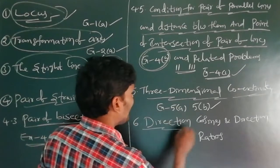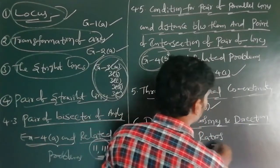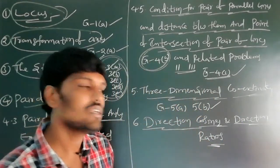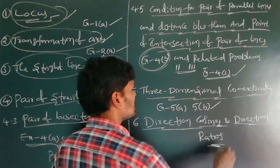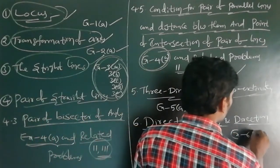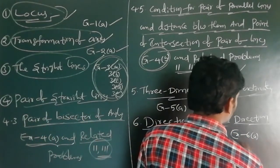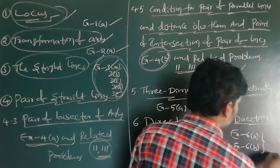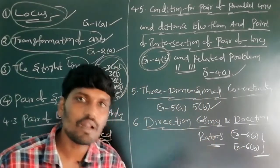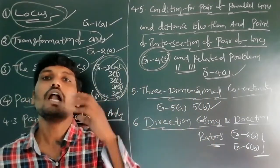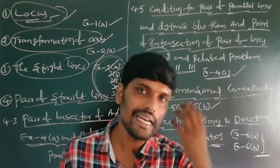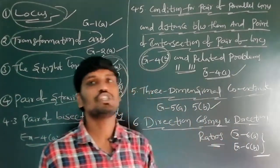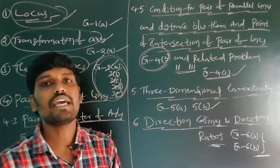Chapter 6 is Direction Cosines and Direction Ratios. This chapter has two exercises — Exercise 6a and Exercise 6b. In this chapter also, no topic has been deleted. Direction Cosines and Direction Ratios is fully coming to the IP examination.